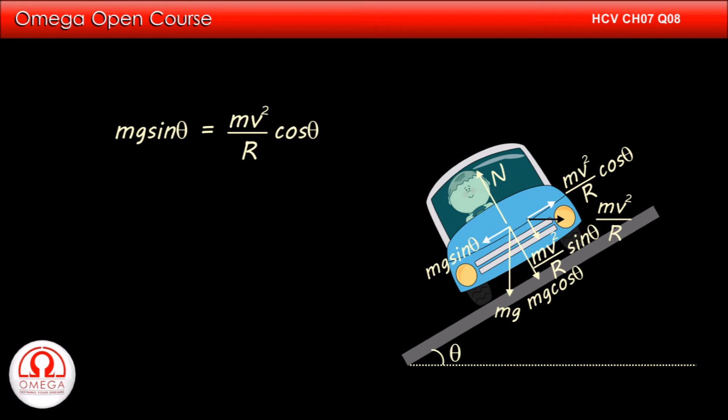Thus, Mg sin theta must be equal to Mv squared by R cos theta which implies V squared is equal to Rg tan theta or V is equal to root under Rg tan theta.